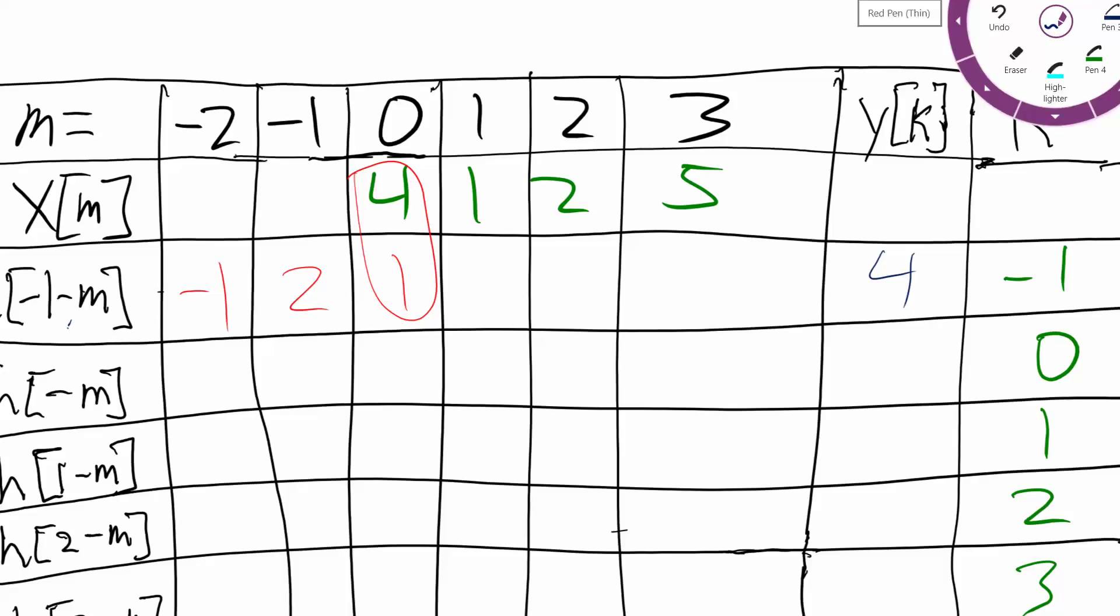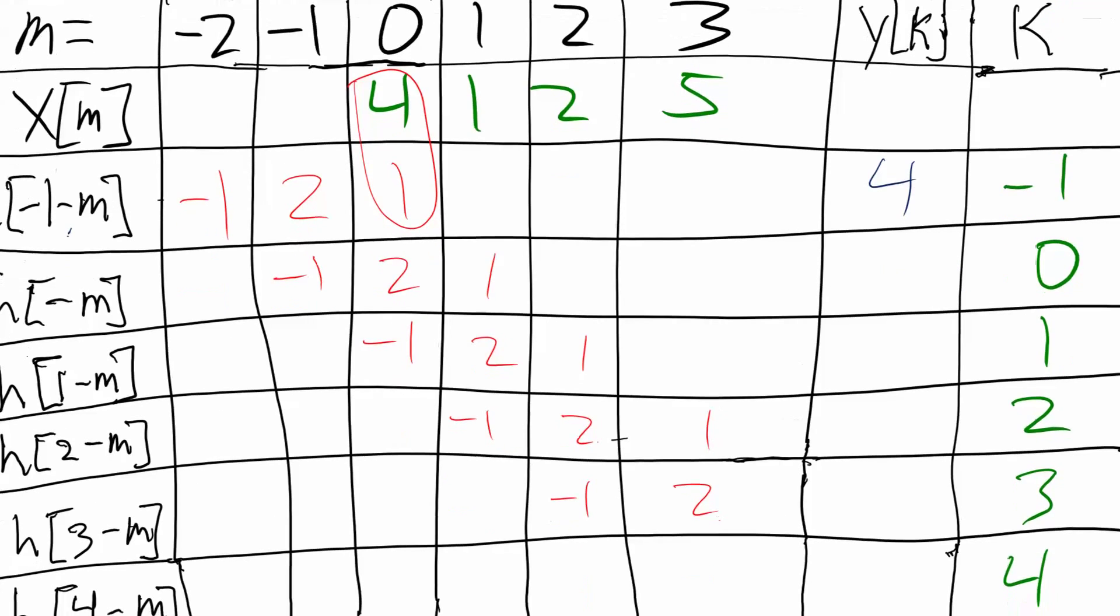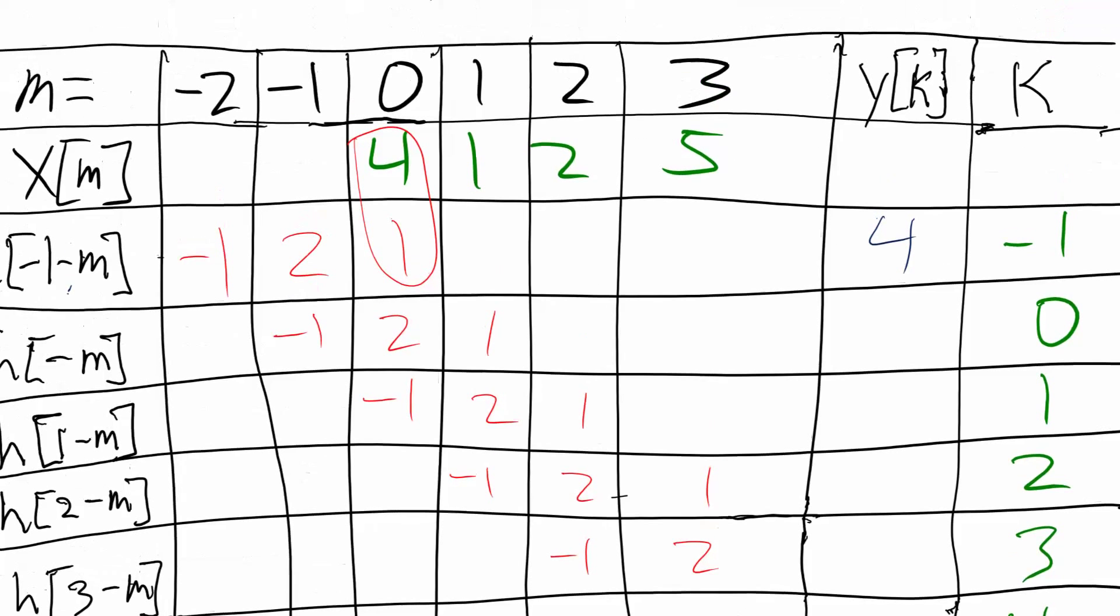Then I'm just going to go ahead and fill this table out here. So we have negative 1, 2, and 1. Negative 1, 2, and 1. We're just sliding this down by 1 each time. And then negative 1 there, until there's only 1 overlapping. So that's how we know we have a complete table.